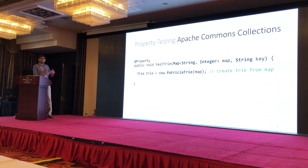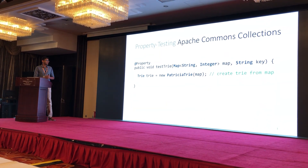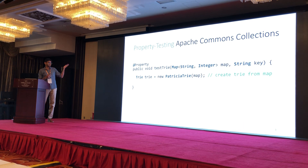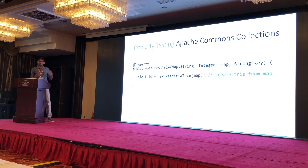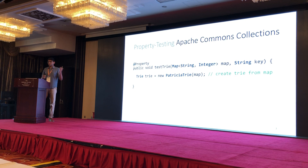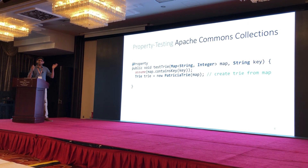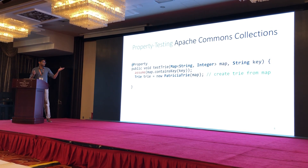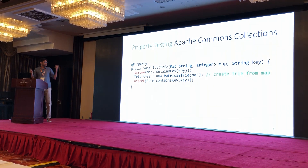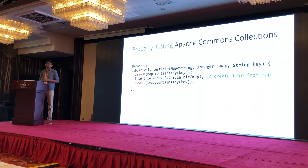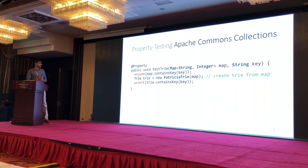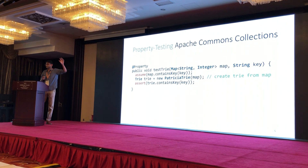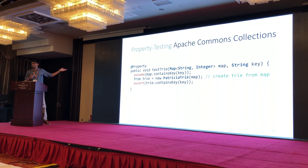A property test is nothing but a JUnit-style method, but it takes some parameters. In this case, we give it two parameters: an input map — a map from strings to integers — and another string, which is some key. The property test can have preconditions. So you can say, let's assume that the key you're providing actually exists in this map. Now if I construct a new trie from this map, I should expect that the trie also contains the same key. This is a reasonable contract that every trie should satisfy — for all input maps and keys, if the key exists in the map, it should also exist in the trie.